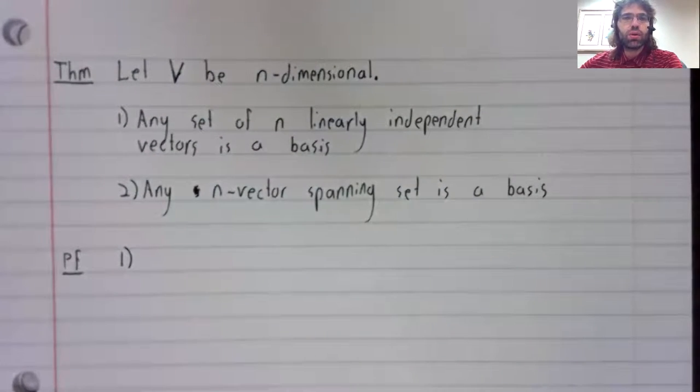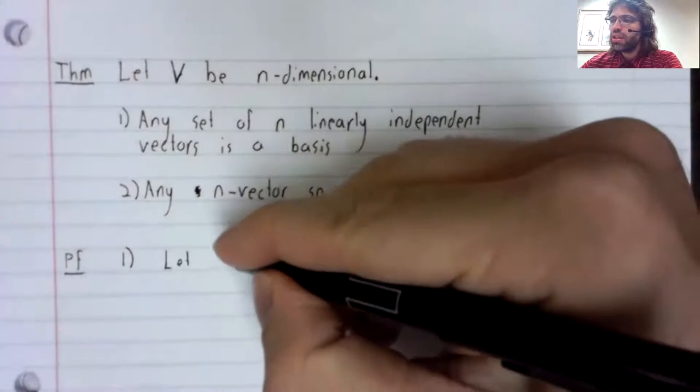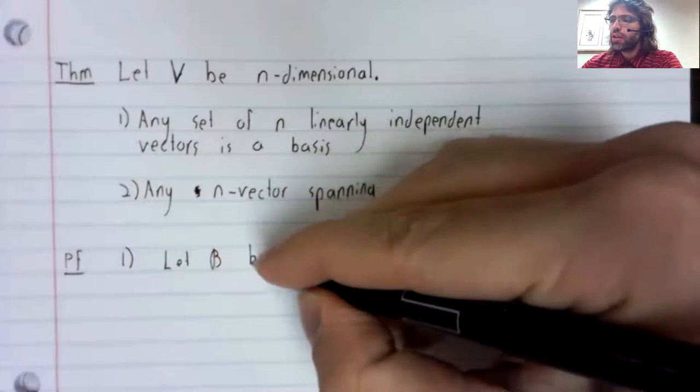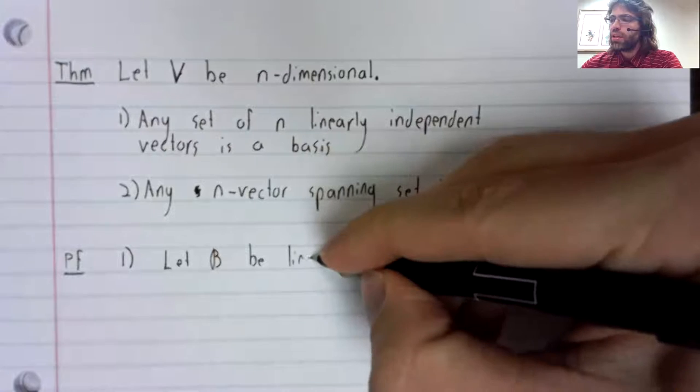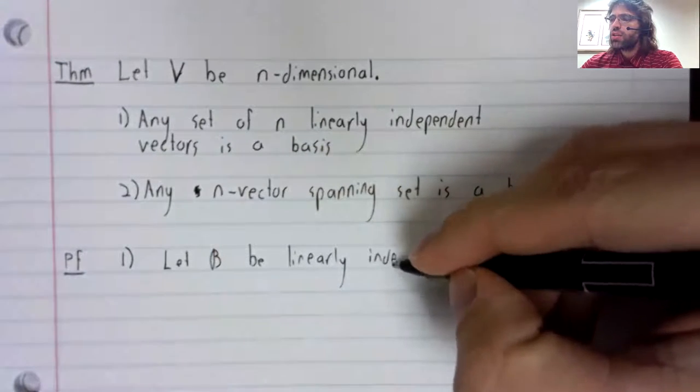Let's just do these in order. Let B be linearly independent.